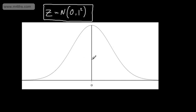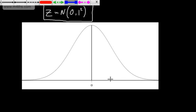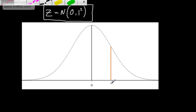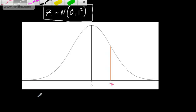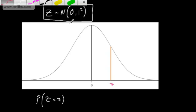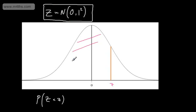Let's take some value — I'm going to call this lowercase z — and put it on the graph. We can say that the probability of our random variable, capital Z, being less than the observed value of lowercase z, is equal to the area trapped under the curve to the left of this line. So the probability that this continuous random variable Z is less than the observed value of z equals the area trapped under the curve.